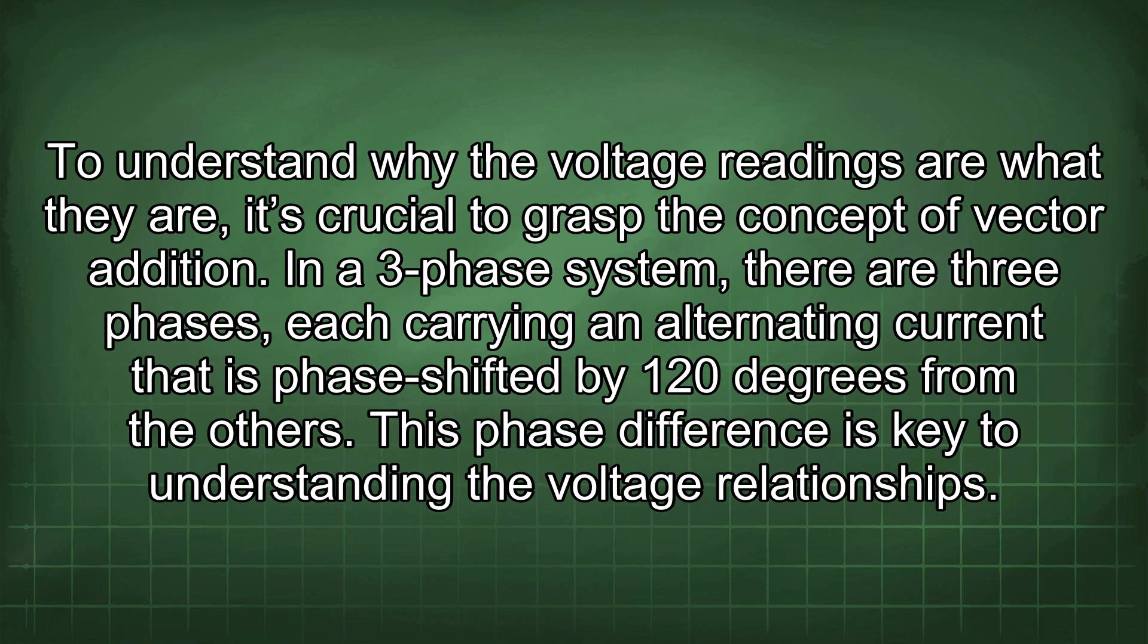To understand why the voltage readings are what they are, it's crucial to grasp the concept of vector addition. In a 3-phase system, there are three phases, each carrying an alternating current that is phase-shifted by 120 degrees from the others. This phase difference is key to understanding the voltage relationships.